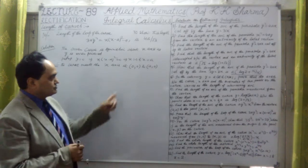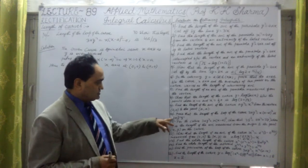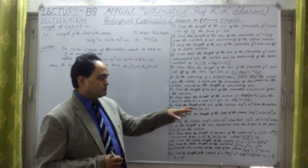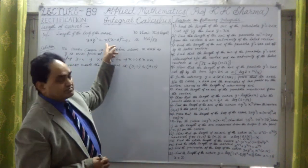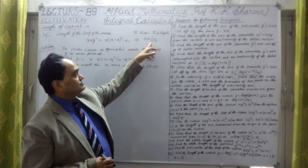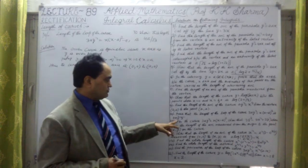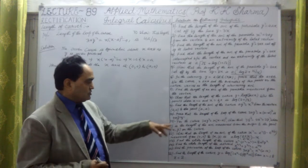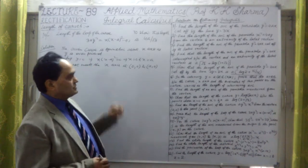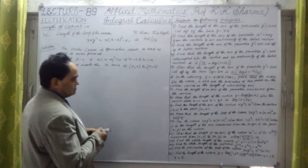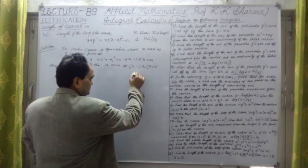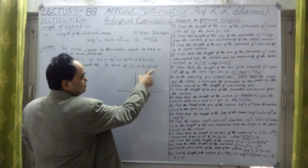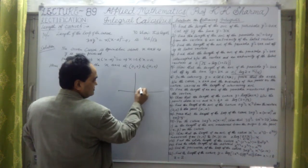We are continuing with question number 10. The question says we have to prove that the length of the loop of the curve is 4a upon root 3 — not 4a times root 3, but 4a divided by root 3. Let me draw a rough sketch of the curve showing the origin (0,0) and the point (a,0).